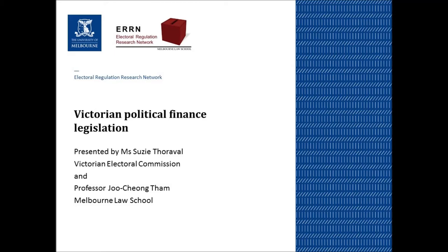First I'll mention some key definitions in the bill. Political expenditure is expenditure for the dominant purpose of helping to promote or oppose a candidate at an election. A political donation is a gift to a registered political party, a candidate, a group of candidates, an elected member or a nominated entity, or a gift to an associated entity or a third party campaigner intended for use as a political donation or to incur political expenditure — for the dominant purpose of directing, promoting, helping to promote or oppose a candidate at an election.